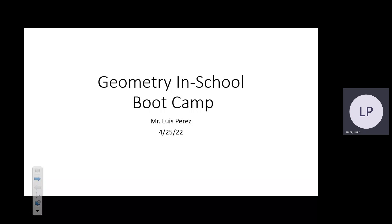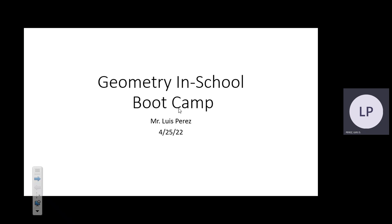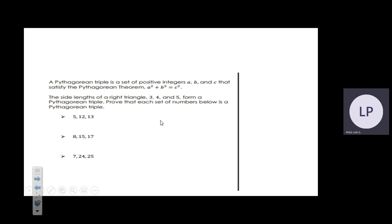Good morning. Today we will be covering trigonometry, which is unit five of this class. The first question we will be looking at has to do with Pythagorean triples. Pythagorean triples correlate directly to whether a set of numbers will make a right triangle or not.